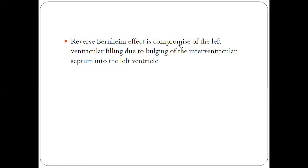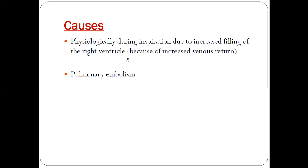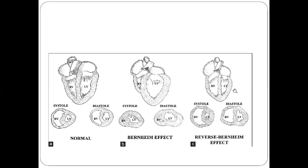The reverse Bernheim effect, as mentioned, is where increased pressure of the right ventricle causes a compressive effect over the left ventricle. This can be seen physiologically during inspiration, when there is increased filling of the right ventricle, which then compresses the interventricular septum. It is also seen in pulmonary embolism and constrictive pericarditis. In pulmonary embolism, due to right ventricular outflow tract obstruction, right ventricular pressure increases and compresses the left ventricle, leading to obstructive syndrome of the left ventricle, increased backflow, elevated pulmonary venous pressures, and pulmonary edema.